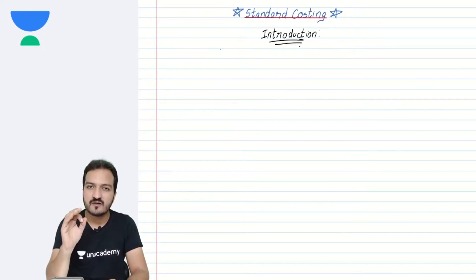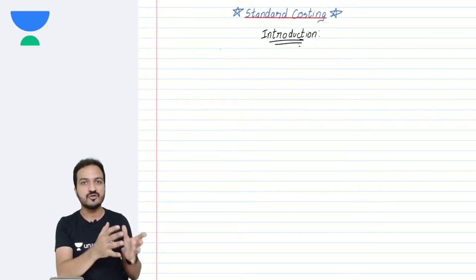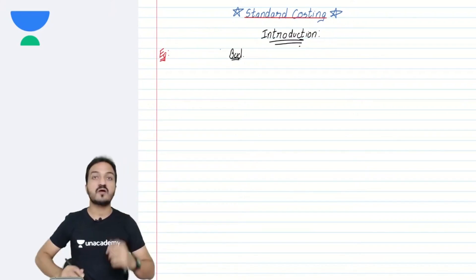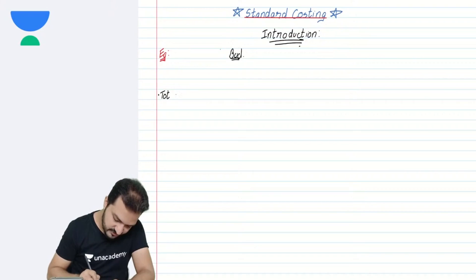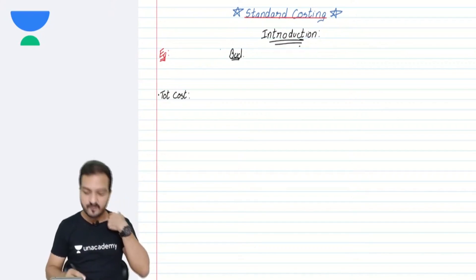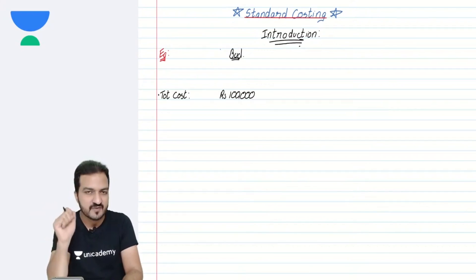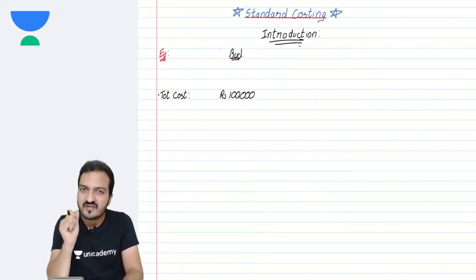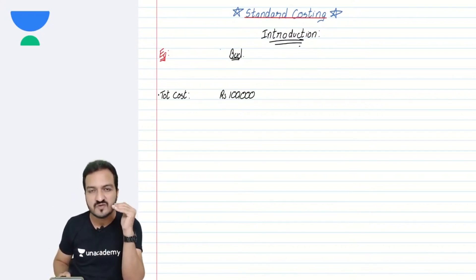Even though they make a budget based on the best possible estimate, it is very much possible that the actual situation during the year might turn out to be different from what they budgeted. Say the company made a budget for the next year and estimated the total budgeted cost at rupees 1 lakh — including material, labor, overheads, all items of cost. By the end of the year, they will come to know the actual data.